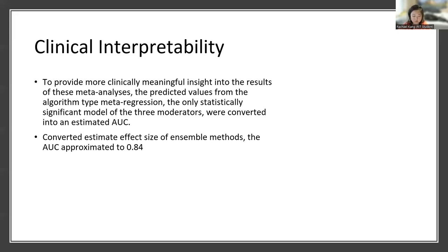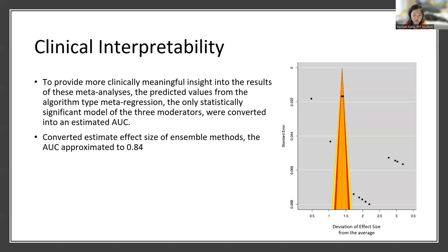Switching back to deep learning: deep learning was the only subgroup that performed significantly better than the ensemble methods in terms of accuracy in predicting suicide risk. But when we look at this funnel plot for deep learning, we see that there may be evidence of publication bias, and that most of the articles published had very high effect sizes, whereas only two articles published showed low effect sizes. The studies that had high effect sizes averaged around an AUC of 0.89.